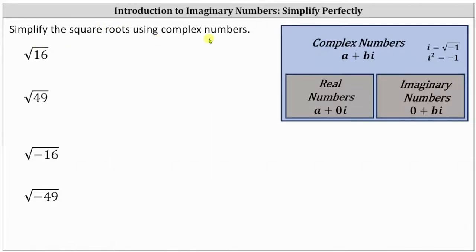We're asked to simplify these square roots using complex numbers. Complex numbers are numbers in the form a plus bi, where a is the real part and bi is the imaginary part. i equals the square root of negative one, and i squared equals negative one. Real numbers are complex numbers when b equals zero and a does not. Imaginary numbers are complex numbers when a equals zero and b does not.